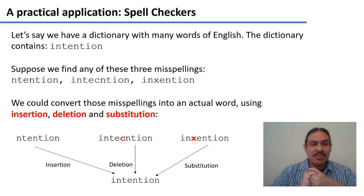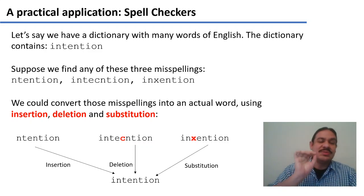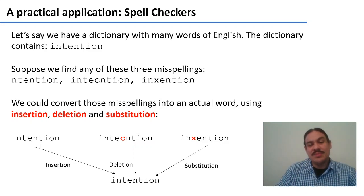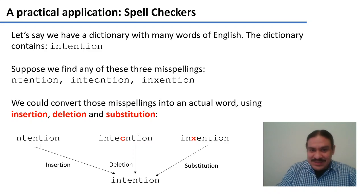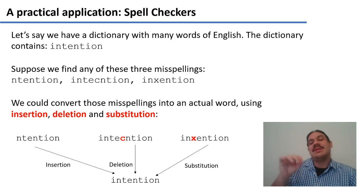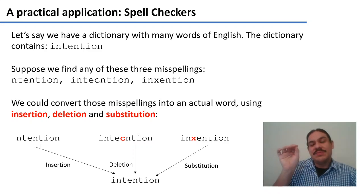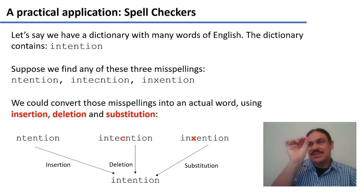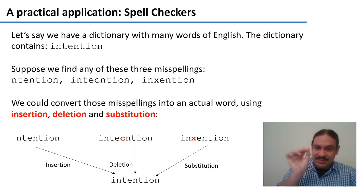For example, to transform 'intenttion' into 'intention' we need to insert an i. To transform 'intentiion' into 'intention' we need to delete the c. And to transform 'inxenction' into 'intention' we need to substitute the x with a t.